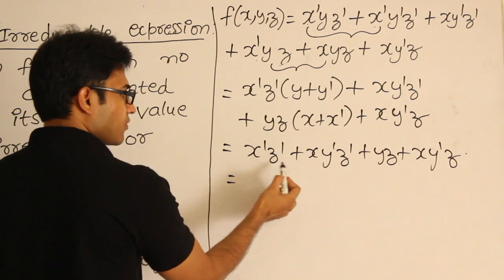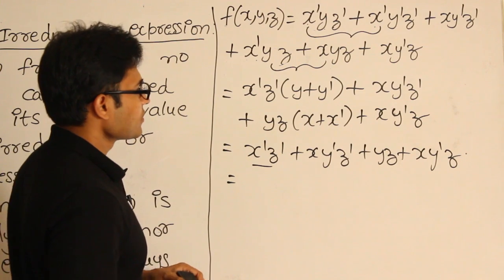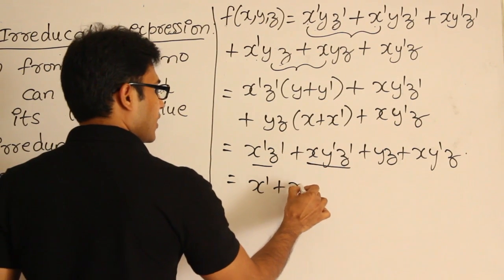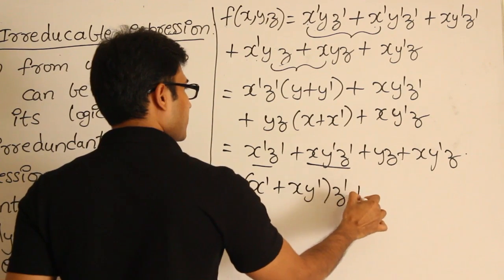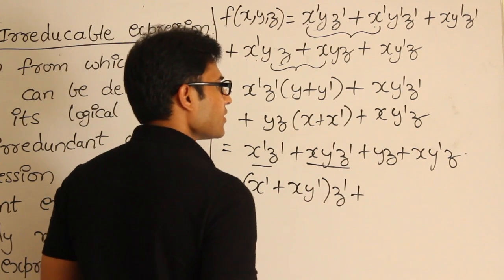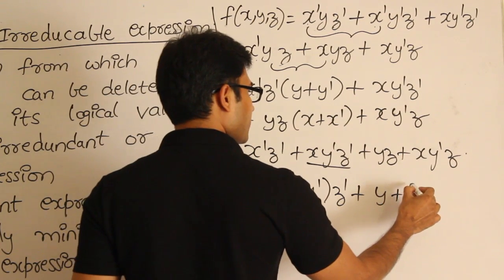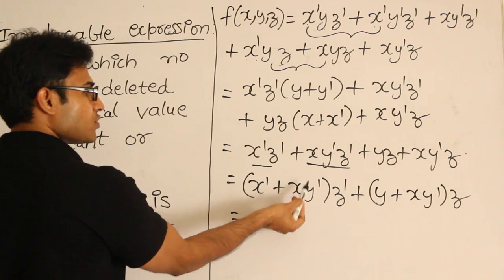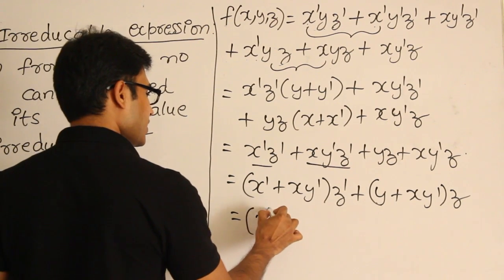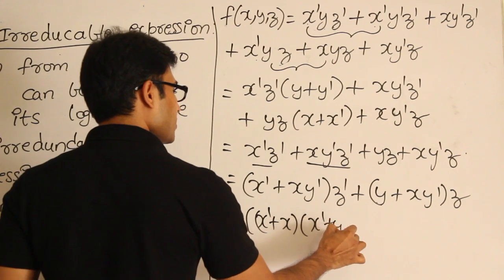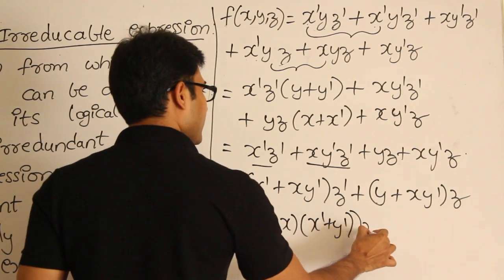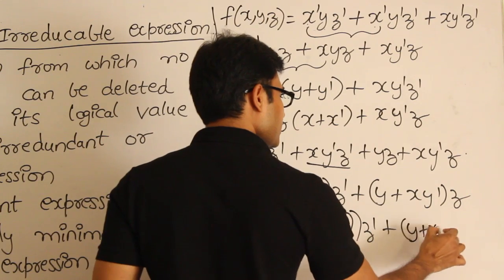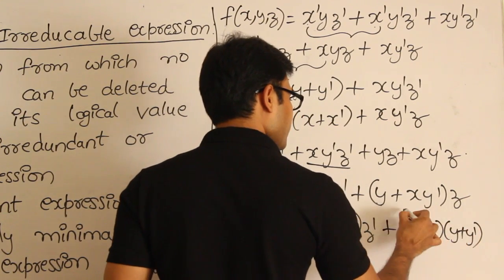Now from the remaining, from these two, you can easily see that you could pull out z prime. Then what is remaining? x prime plus x y prime — z prime plus. From these two, you could easily see that I could pull out z as common. Then what is remaining? y plus x y prime — z. Then now you can distribute this plus over dot. Then what do I get? x plus x prime plus x into x prime plus y prime into z prime plus. Now you can distribute this plus over dot. Then what do I get? y plus x into y plus y prime into z.